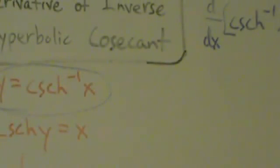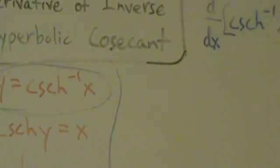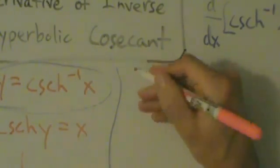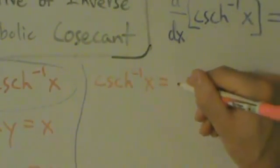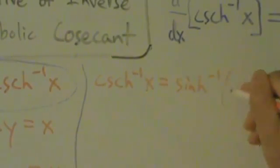That's the same as saying inverse hyperbolic sine of 1/x equals y. Now we have y equals this expression and y equals the original, so by the transitive property these two must be equal to each other. Therefore, inverse hyperbolic cosecant of x equals inverse hyperbolic sine of 1/x.